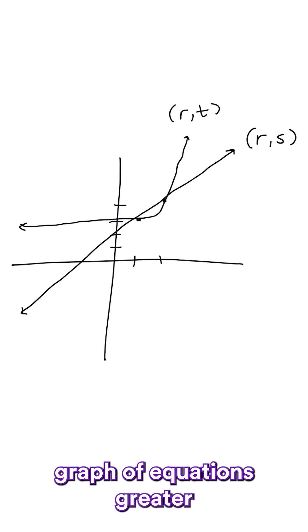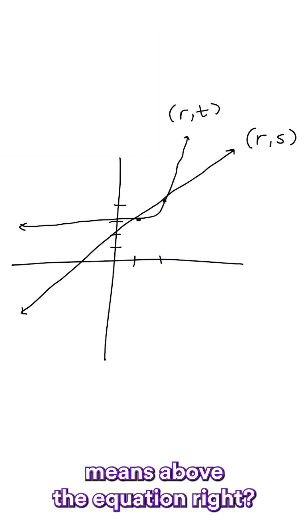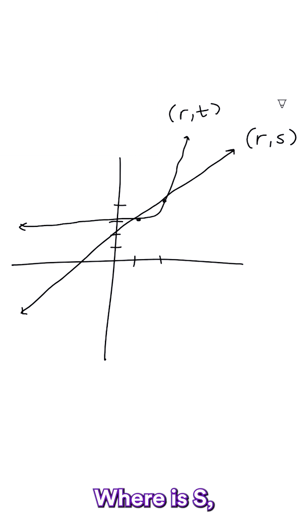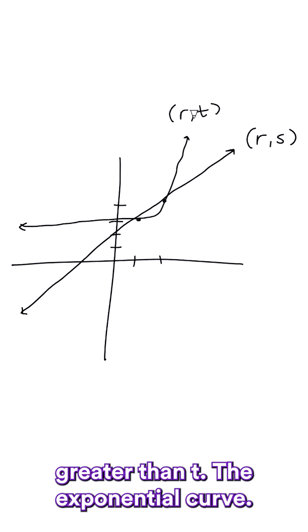So when you're looking at the graph of equations, greater means above the equation. Where is s, where is the line, greater than t, the exponential curve?